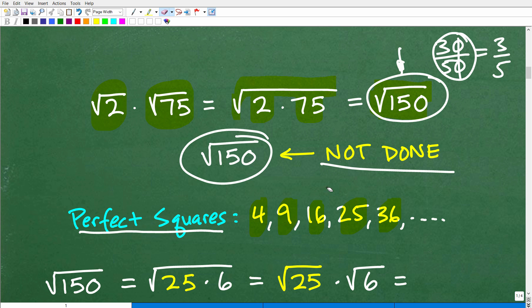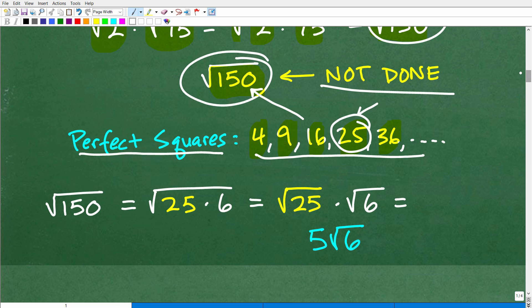So why do we care about perfect squares? Well, when we look at this number 150, when we're trying to simplify it, we want to ask: is any of these numbers, any of these perfect squares, a factor of 150? In other words, can 150 be divided by any of these numbers? So you're kind of thinking about that. If it can, it's a factor. So some of you might be saying, oh, it could be divided by 25, because 25 times 6 is 150. So we have a perfect square factor, so we're going to have to address that now.